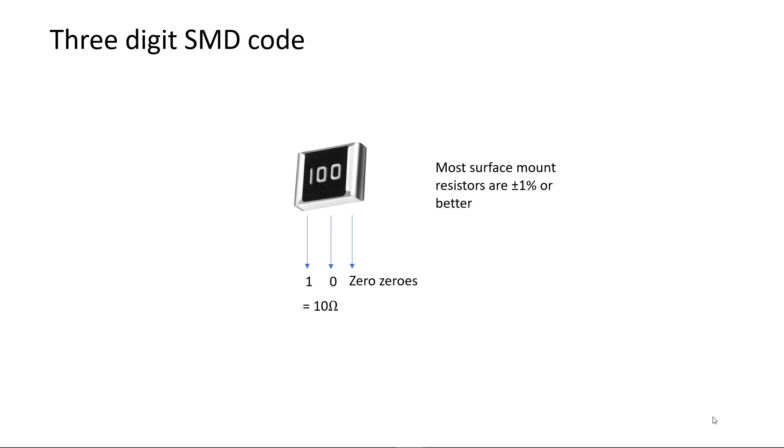Be careful of the 10 ohm surface mount resistor. It will be marked 100. Remember, the third digit is a power of 10 multiplier and 10 to the power of zero equals 1, and so in effect, no zeros are added to the final value.